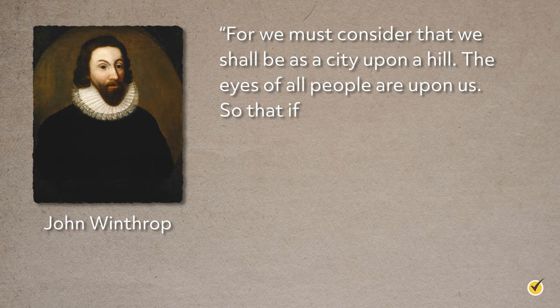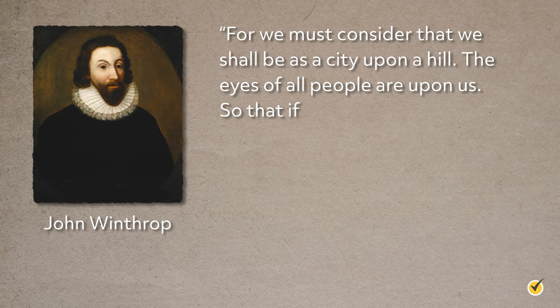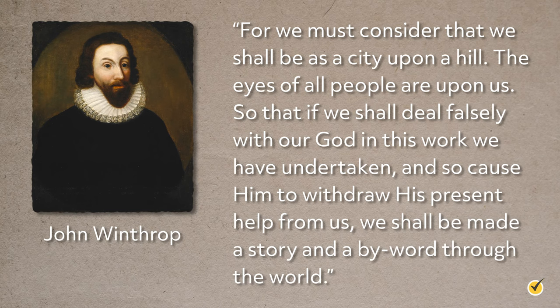Contrary to popular belief about this statement, however, Winthrop was not saying that the colony was destined for greatness and all other nations must look to it as an example. Rather, he meant it as a precaution — other nations would be observing the new colony, and if they failed, they would do so on the world stage. "For we must consider that we shall be as a city upon a hill. The eyes of all people are upon us, so that if we shall deal falsely with our God in this work we have undertaken, and so cause him to withdraw his present help from us, we shall be made a story and a byword through the world."